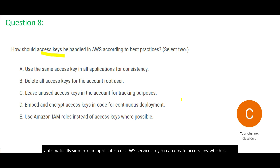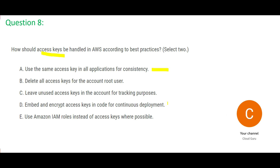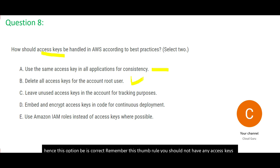The first option is wrong because you should not use the same access keys, as it increases the chances of hacking. Best practice suggests you should disable or delete all access keys for the account root user. Hence option B is correct. Remember this thumb rule: you should not have any access keys defined at the account root user level. Since the question is asking about best practice, B is correct.